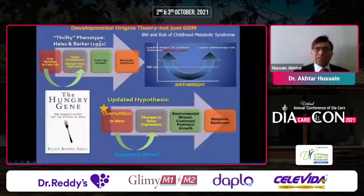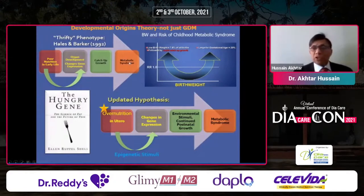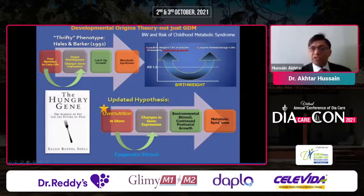Regarding challenges, we started with the thrifty phenotype hypothesis proposed by Barker in 1992. Under-nutrition in early life gives rise to changes in gene expression, followed by catch-up growth and metabolic syndrome. The updated hypothesis also includes over-nutrition. Both under-nutrition and over-nutrition affect gene expression, which in turn responds to environmental stimuli and results in metabolic syndrome and eventually diabetes.